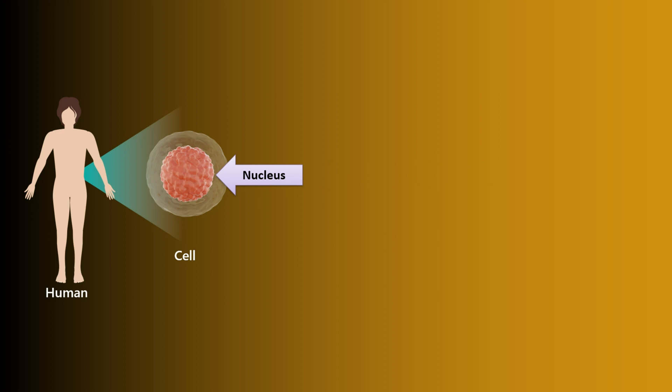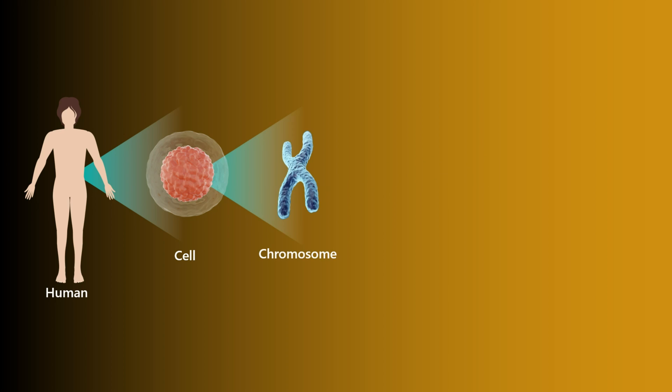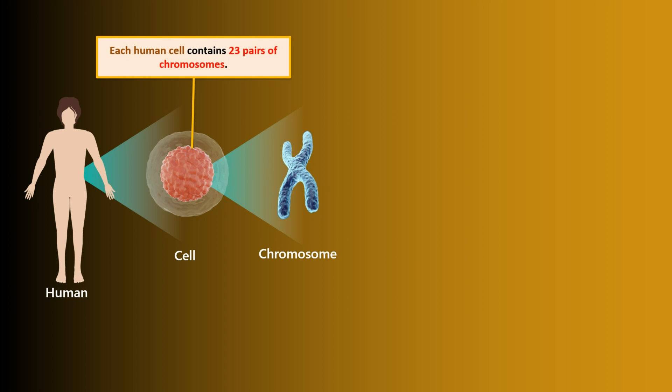Inside the nucleus, we find chromosomes. Each human cell contains 23 pairs of chromosomes.